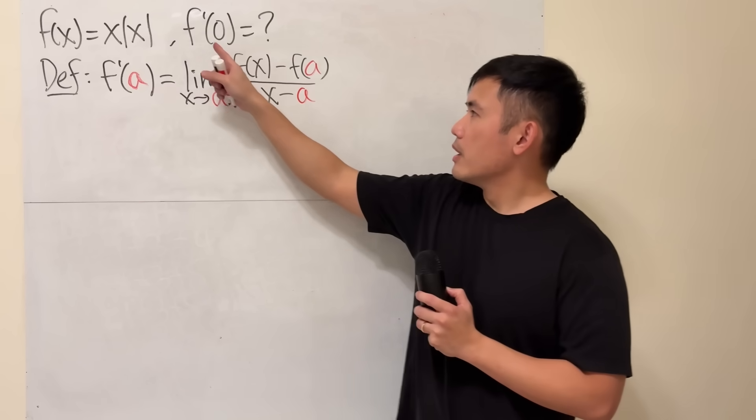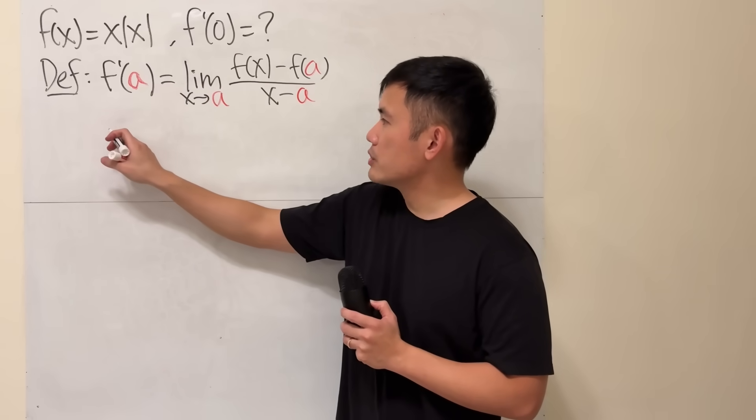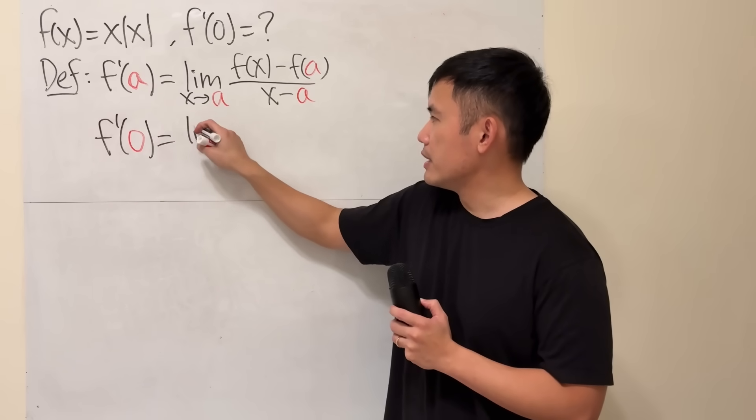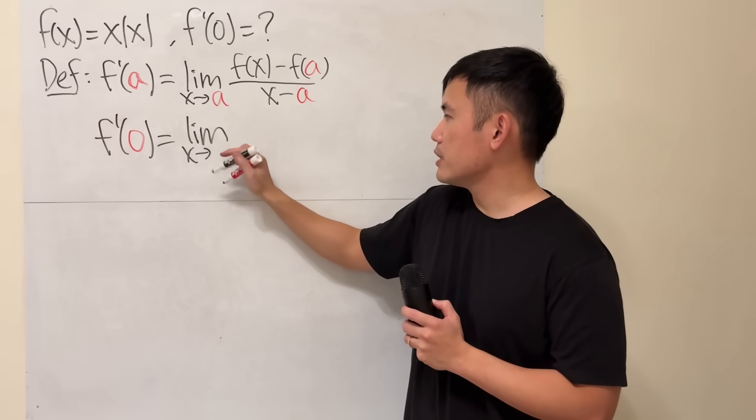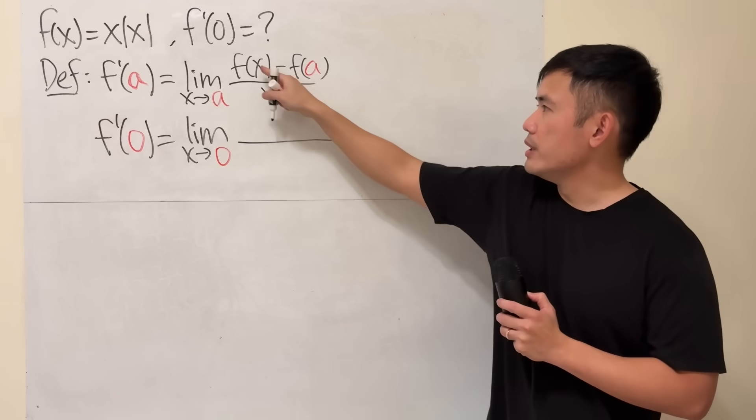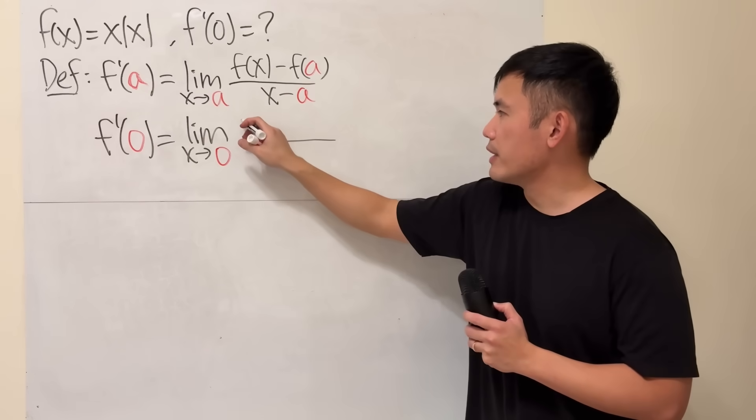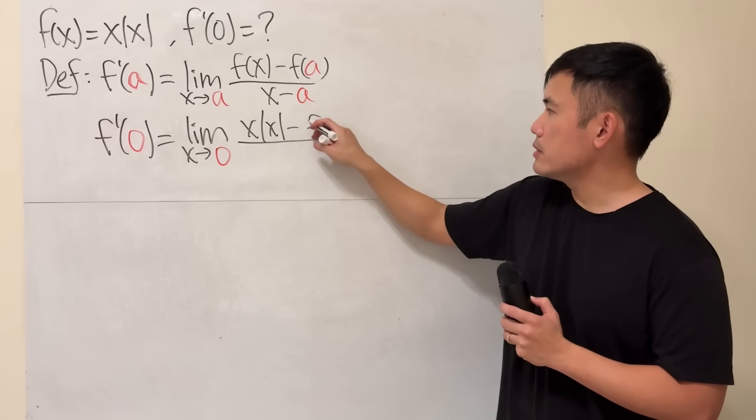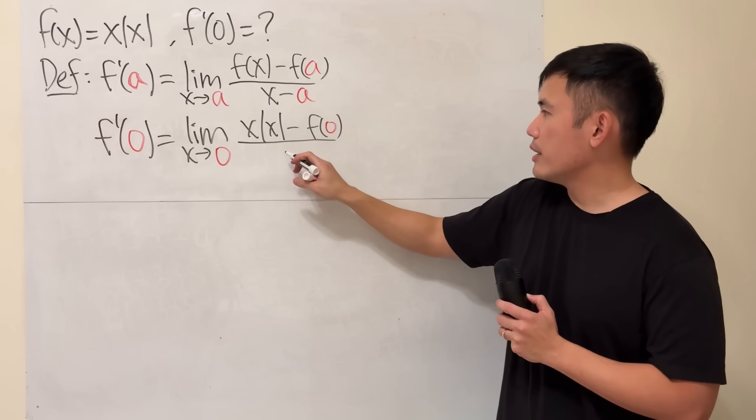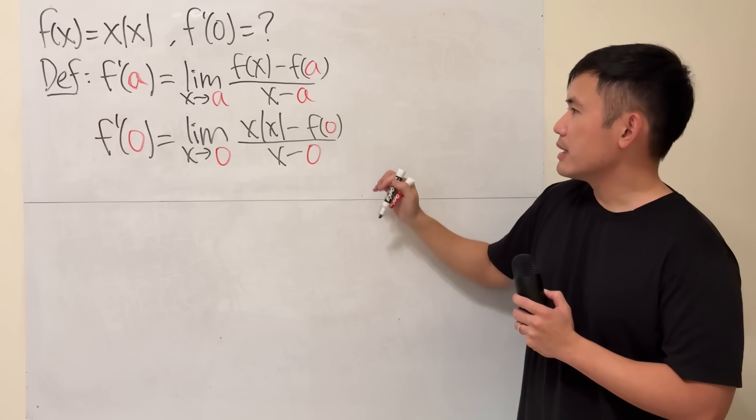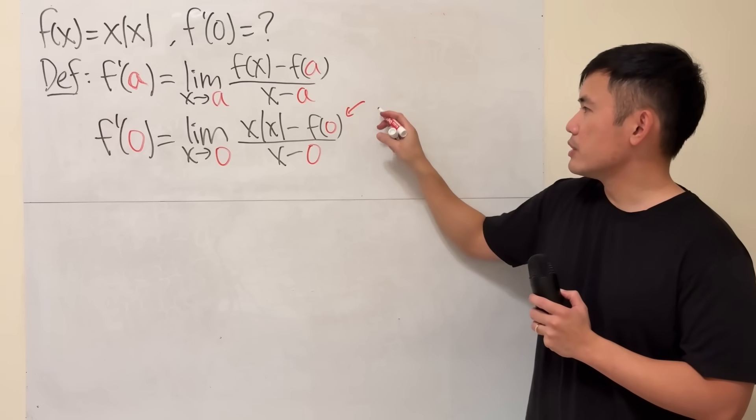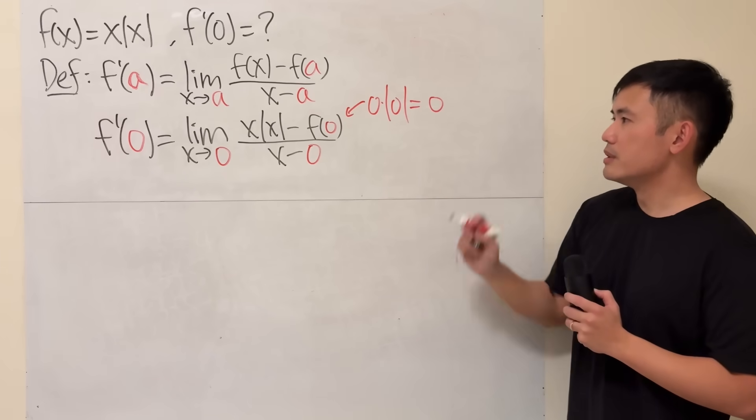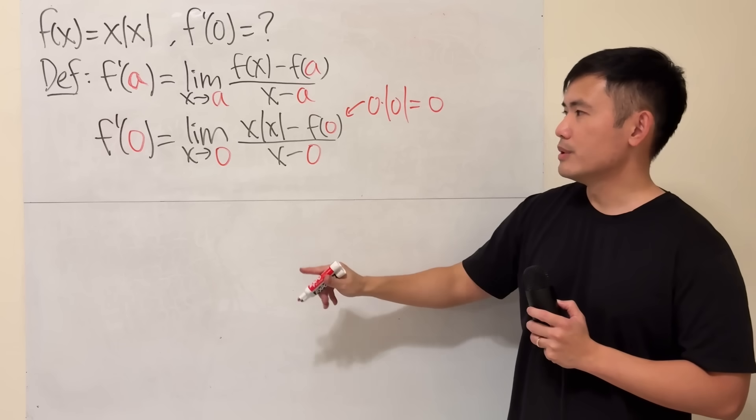Now, this is the function, a will be 0. So f prime of 0, we have the limit as x approaching 0. We need the function, which is x times absolute value of x, minus f of 0, and then over x minus 0. But f of 0, this right here is just 0 times absolute value of 0, which is of course 0, and that's also 0, so we just have that.